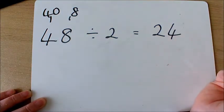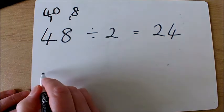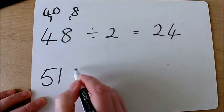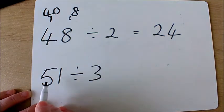A slightly harder one would be 51 divided by 3. I can't divide my 50 by 3, but I'm going to partition my 51 into 30 and 21.